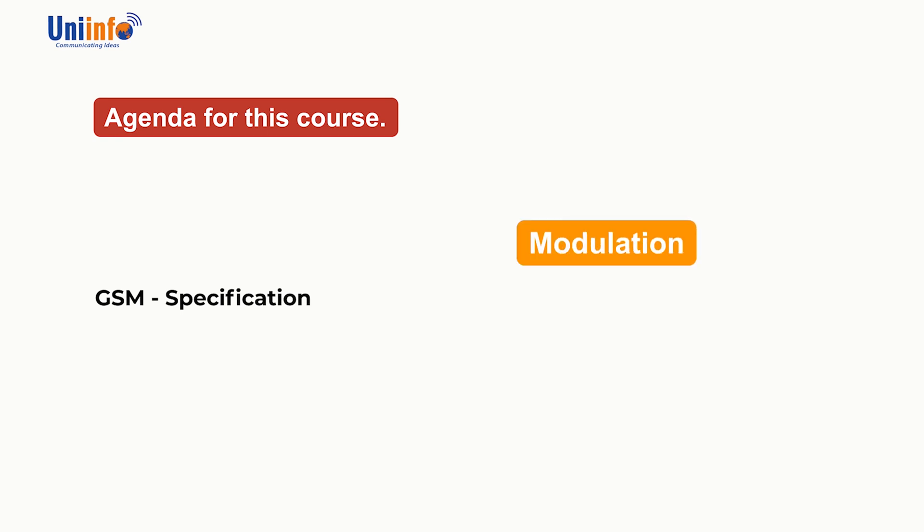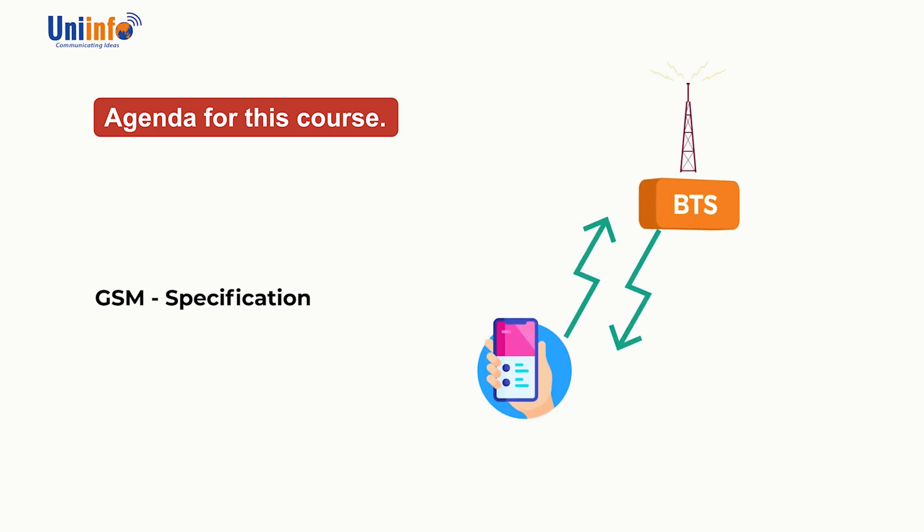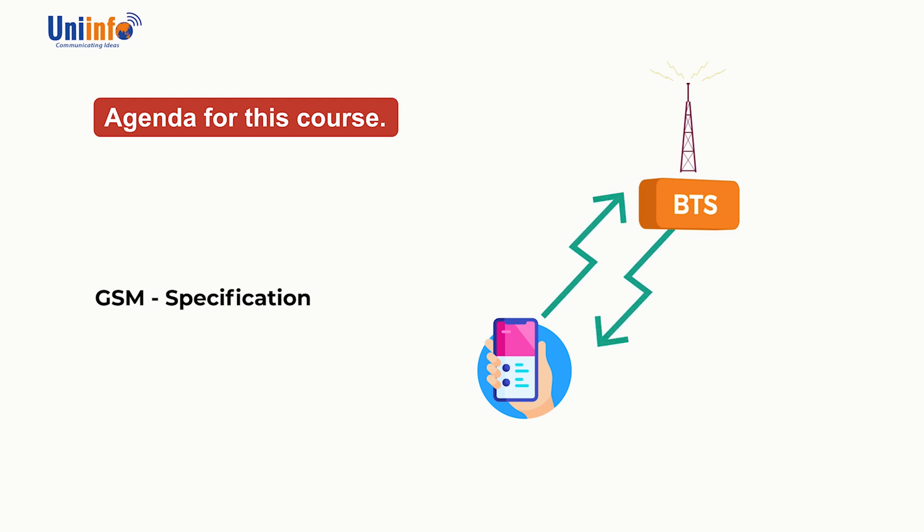GSM Specification: In this section, we will learn about the modulation used for GSM, the access control technique for efficient usage of bandwidth, and the operational frequency band used for uplink and downlink — which means from mobile set to BTS and BTS to mobile set respectively.